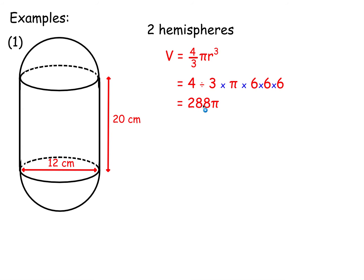Similar with the cylinder, V equals pi r squared h. R is 6. And the height is 20 if you put these figures in. 6 times 6 times 20 is a multiple of pi. It's 720 pi.